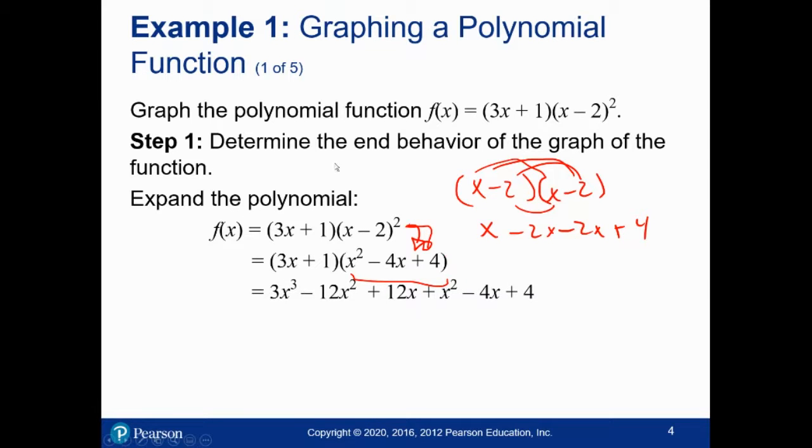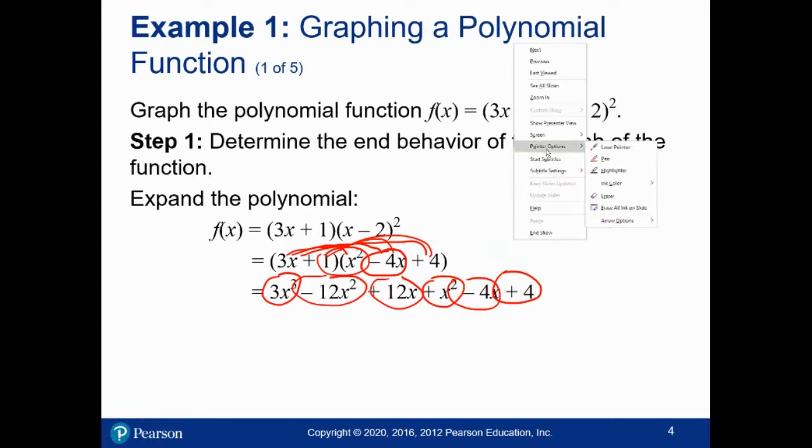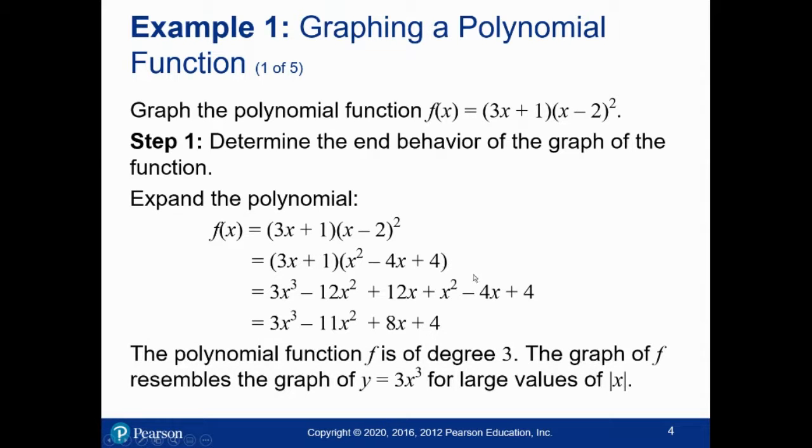Okay, distributing this out is just a matter of taking all possible combinations. 3x times x squared gives me 3x cubed. 3x times negative 4x gives me negative 12x squared. 3x times 4 gives me 12x. And now let's do 1 times x squared, 1 times negative 4, and 1 times 4. That's just how you distribute things out. Take all possible combinations. Then collect like terms. We have a negative 12x squared and a positive 1, which gives me negative 11x squared. We have a plus 12x minus 4x gives us plus 8x.